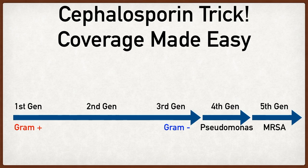Starting with first generation cephalosporins — they have great gram positive coverage. They cover most gram positive cocci including staph and strep, which is why they're really good for soft tissue and skin infections. They do have some gram negative coverage as well, such as E. coli.